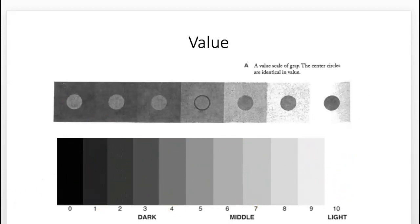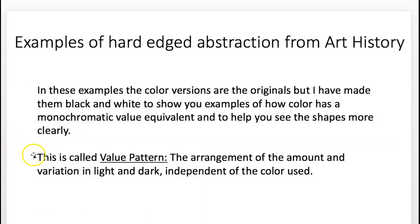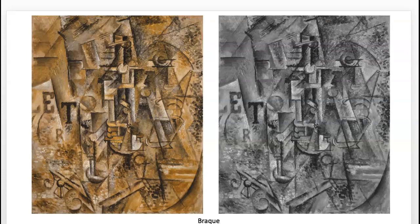You're going to be using a set number of values — five of them in your project. I don't want you to have too many values because it gets hard to unify and control the story you're creating. We could call this arrangement of the amount of variation in light and dark a value pattern. It's independent of color, but color has a value — they have an interesting relationship. Here's an example by George Braque.